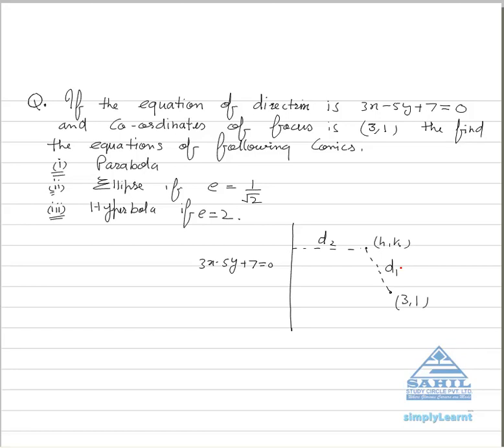Now see dears, all of these concepts can be understood by this particular example. In this question the equation of directrix is given, that is 3x minus 5y plus 7 equals 0, and the coordinates of focus is (3,1).